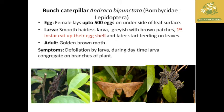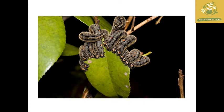The next pest is the bunch caterpillar, which gets its name from the larvae being found in bunches on tea plantations. The egg is laid up to 500 eggs on the underside of the leaf. The larvae are smooth and hairless with a grayish color with brown patches, and they first eat their own eggshell before feeding on leaves. The adult is a golden-brown moth. The symptom is defoliation by larvae during daytime and congregation on branches in bunches.